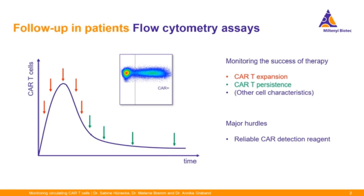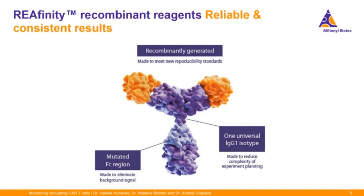For such clinical flow cytometry assays, a reliable and high-performing CAR detection reagent is essential. You need a reagent that performs consistently from lot to lot, that is reliable and works with different CAR constructs, that is sensitive enough to detect small numbers of CAR T-cells in blood samples from different donors, that is specific and only gives you true positive events, that is accurate and gives meaningful results in samples with different amounts of CAR T-cells, and that gives reproducible results independent of the operator or location.